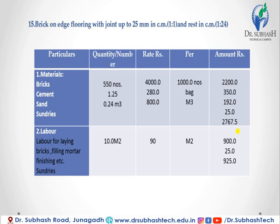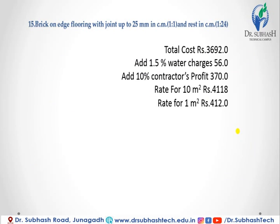For labor: laying bricks, filling mortar, finishing, etc., for 10 meter square at 90 rupees per meter square; 90 multiplied by 10 equals 900 rupees. Sundries cost is 25 rupees. Total labor cost is 925 rupees. Total material plus labor cost is 3,692 rupees. Adding 1.5% water charges of 56 rupees and 10% contractor's profit of 370 rupees, the rate for 10 meter square is 4,180 rupees and rate for 1 meter square is 418 rupees.